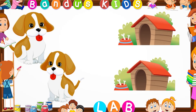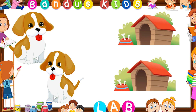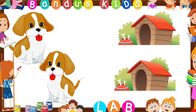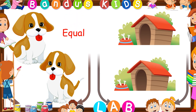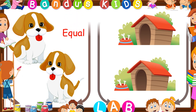Look at this picture. Let's count with me: one, two — here are two dogs. Now let's count the kennels: one, two — here are two kennels. The number of dogs and the number of kennels is equal in number, so they are equal.